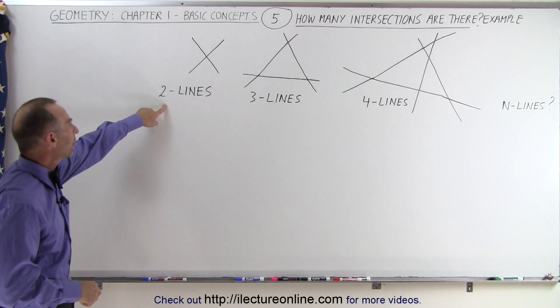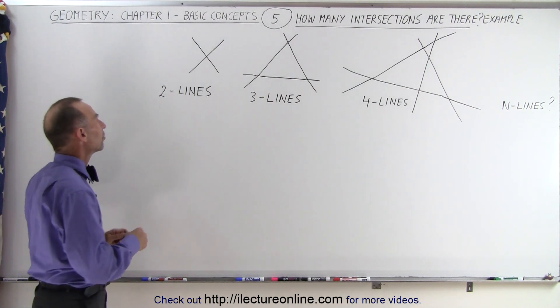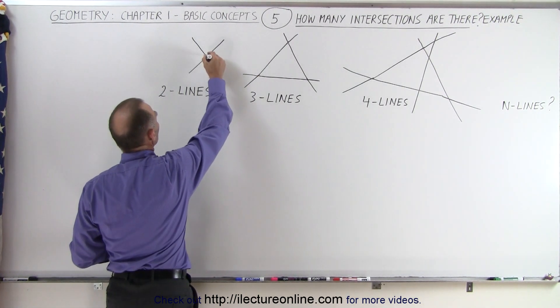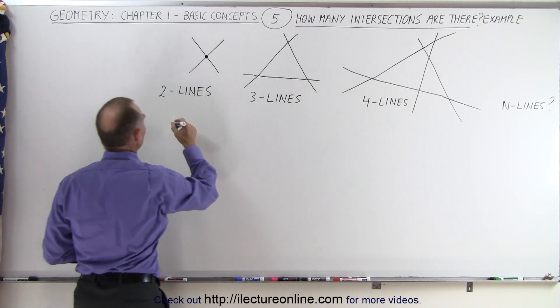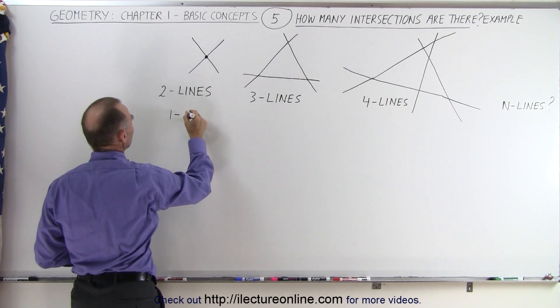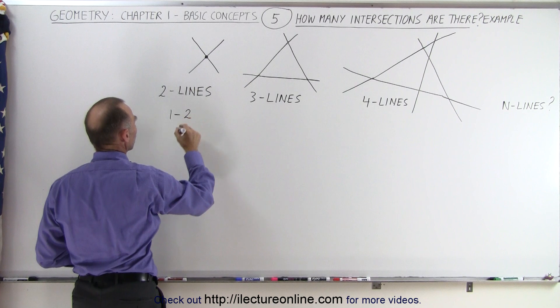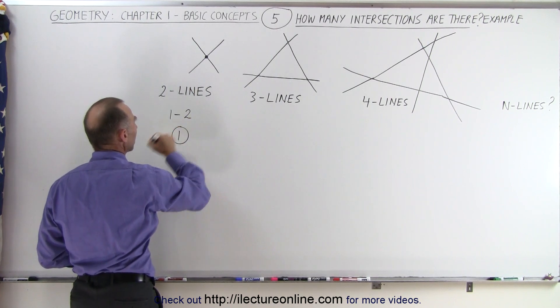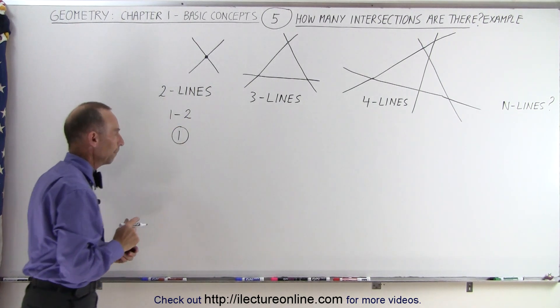So when we have two lines, you can see there's clearly just one intersection. We can say that we have line one intersecting with line two, and so there's just one intersection there.